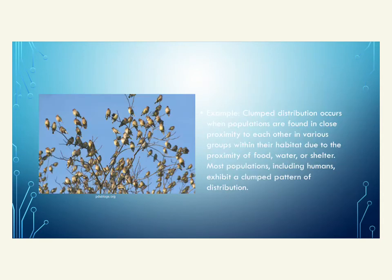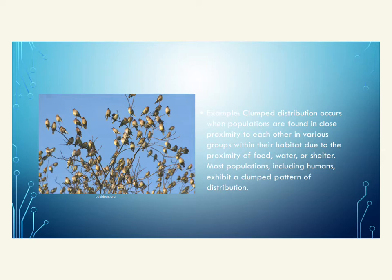The next pattern is clumped distribution, which is probably the most common. Humans cluster in cities — we can see this from the lights on Earth. Many other populations do the same; birds, for example, are more often seen in groups than alone. Groups choose habitats based on proximity to food, water, and shelter, causing them to clump together in those regions.